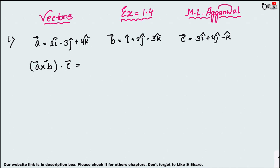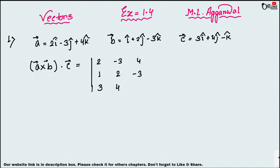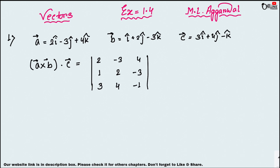For the first part, find a×b and then take the dot product with c. For a×b we write the determinant with the first row 2, −3, 4, the second row 1, 2, −3 from vector b, and then dotting with c we write the third row 3, 4, −1 — those are the i, j, k coefficients of each vector.